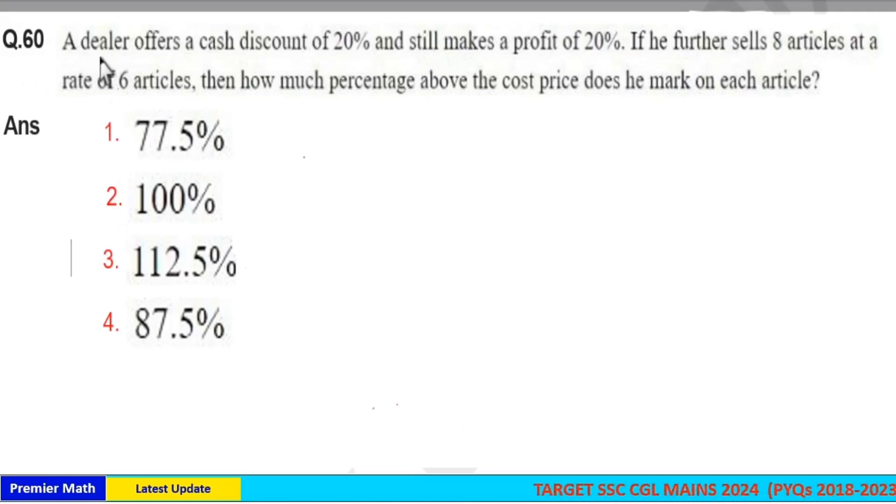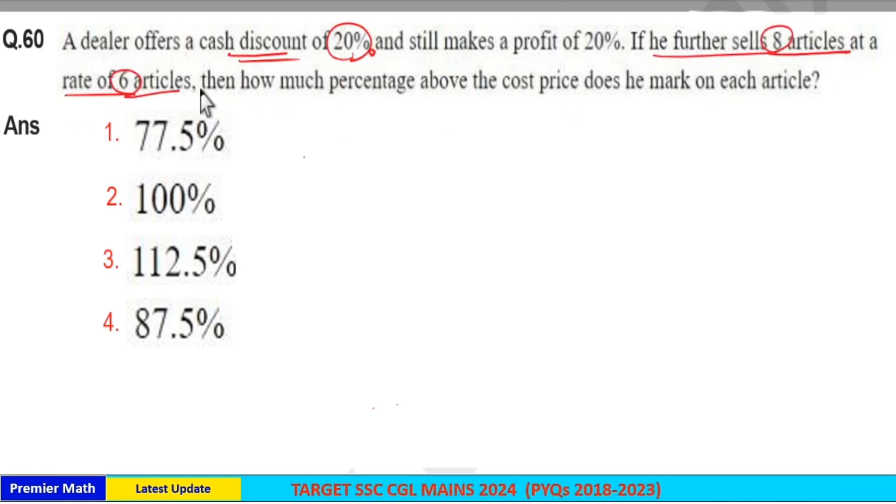Here in this question 60 there is a little confusion in the sentence structure. So I will rearrange this sentence: a dealer offers a cash discount of 20%. If he further sells 8 articles at the rate of 6 articles and still makes a profit of 20%, then how much percentage above the cost price does he mark on each article?